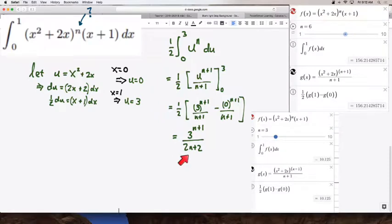and so we just get 3 to the n plus 1 over n plus 1 times 1 half, so I just distribute the 2 into the denominator, and I'm good to go.